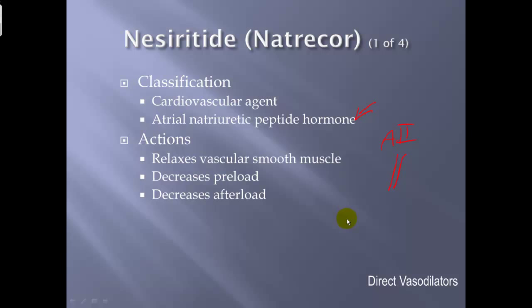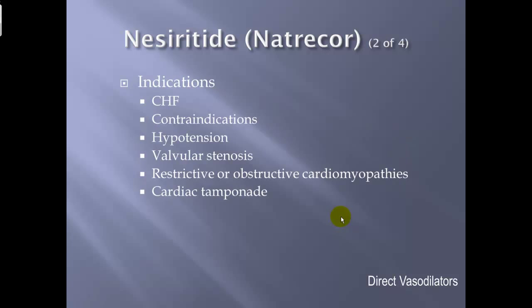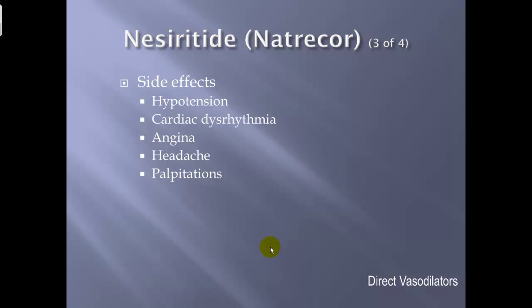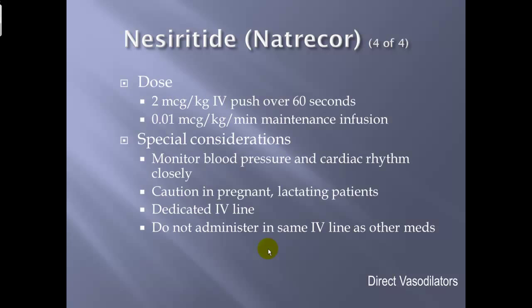Actions: relaxes vascular smooth muscle, decreasing preload and afterload. Indication: congestive heart failure. Contraindications: hypotension, valvular stenosis, restrictive or obstructive cardiomyopathies, and cardiac tamponade. Side effects: hypotension, cardiac dysrhythmias, angina, headache, and palpitations. Dose: 2 mcg/kg IV push over 60 seconds, followed by a maintenance infusion of 0.01 mcg/kg/minute. Special considerations: monitor blood pressure and cardiac rhythm closely; use caution in pregnancy and lactating patients; give via a dedicated line and do not administer other IV medications through the same line.